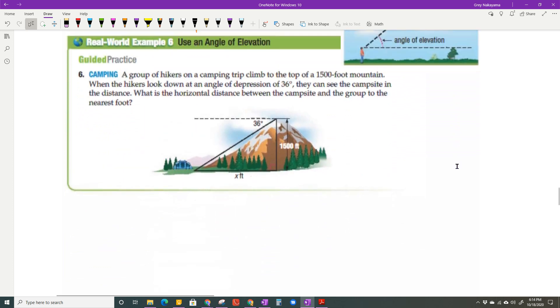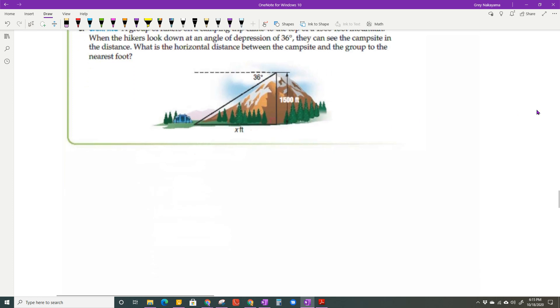We have a group of hikers on a camping trip climb to the top of a 1,500-foot mountain. When the hikers look down at an angle of depression of 36 degrees, so that angle is always measured from the horizontal, this is the angle of depression. They can see the campsite in the distance. What is the horizontal distance? So that means I'm looking for this, not the true distance, but the horizontal distance between the campsite and the group to the nearest foot.